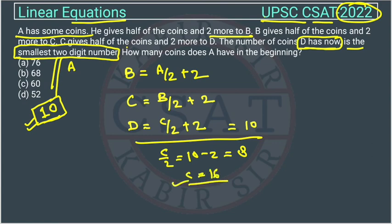If we have C, then we can calculate from this equation B. So B by 2 will be equal to 16 minus 2, so this will come out 14. So B will become 28.